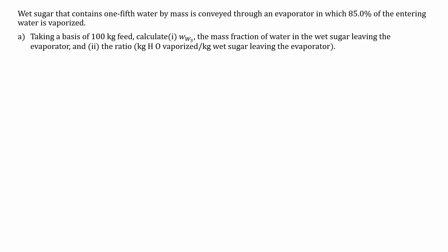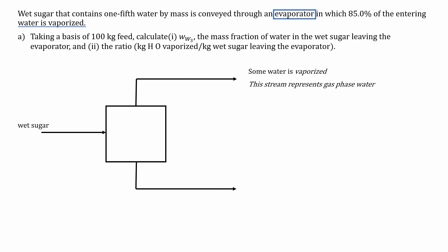Taking a basis of 100 kg feed, calculate the mass fraction of water in the wet sugar leaving the evaporator, and the ratio of water vaporized with respect to wet sugar leaving the evaporator. Assuming you're giving it a go for yourself, I'm going to start by labeling the evaporator in our system diagram. It has one inflow that represents wet sugar, and it's vaporized, so I'm going to have two outflows. Some water is vaporized, so this stream represents the gas phase water. We're assuming this stream to be pure water, and we're going to label this for water vapor. The bottom stream represents dry sugar. We're assuming this stream is mostly dry, but there is still some water, and really the only stream has dry sugar.